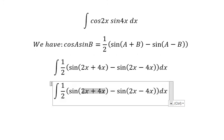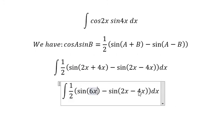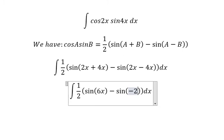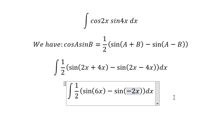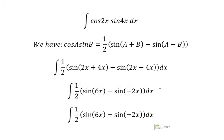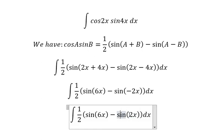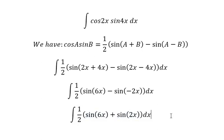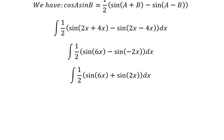This one gives us 6x, and this one we change to negative 2x. Negative times negative gives us positive, and now we have the simplified form.